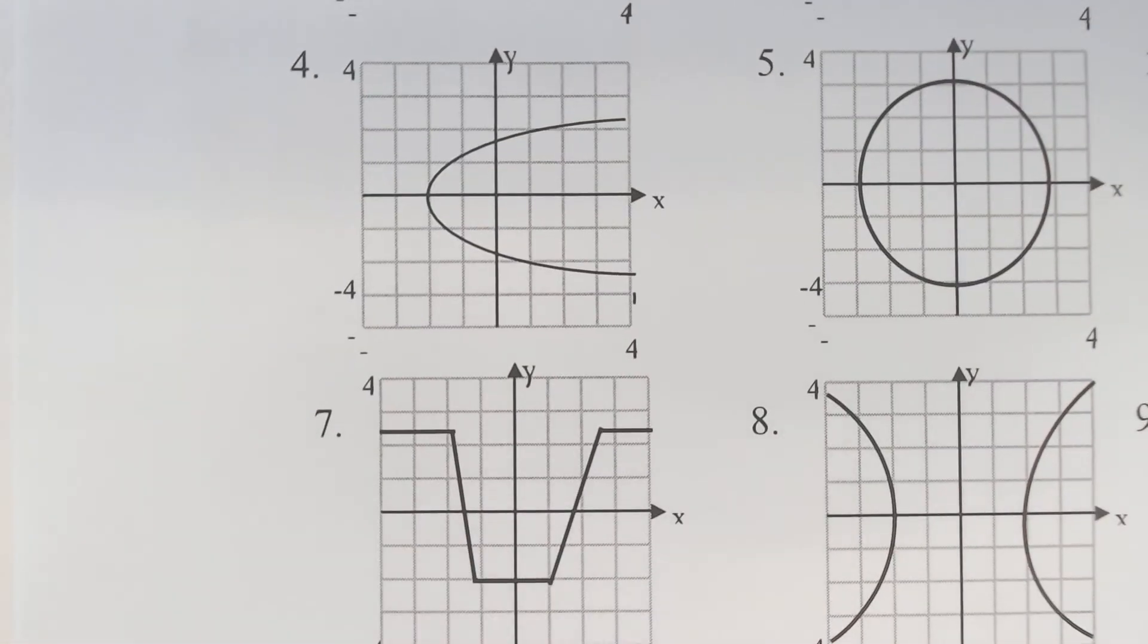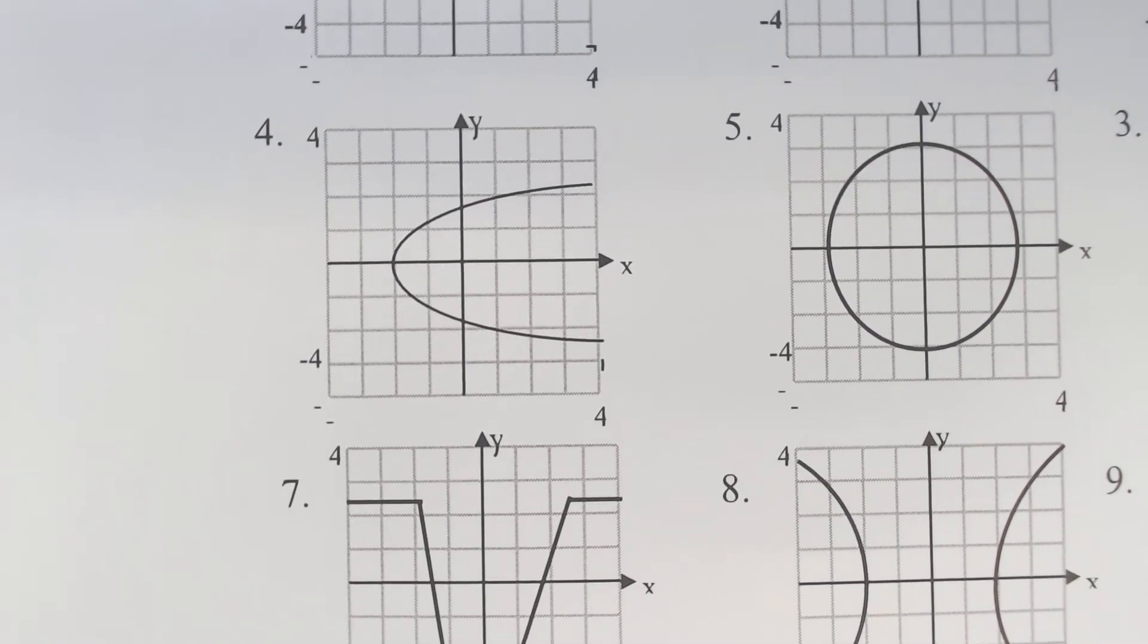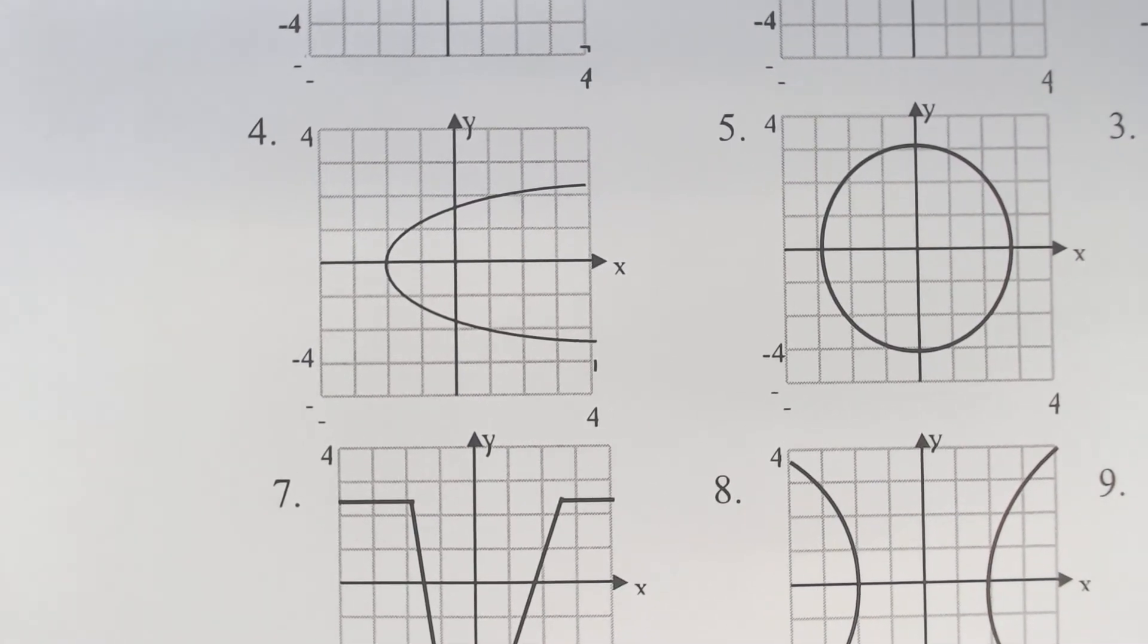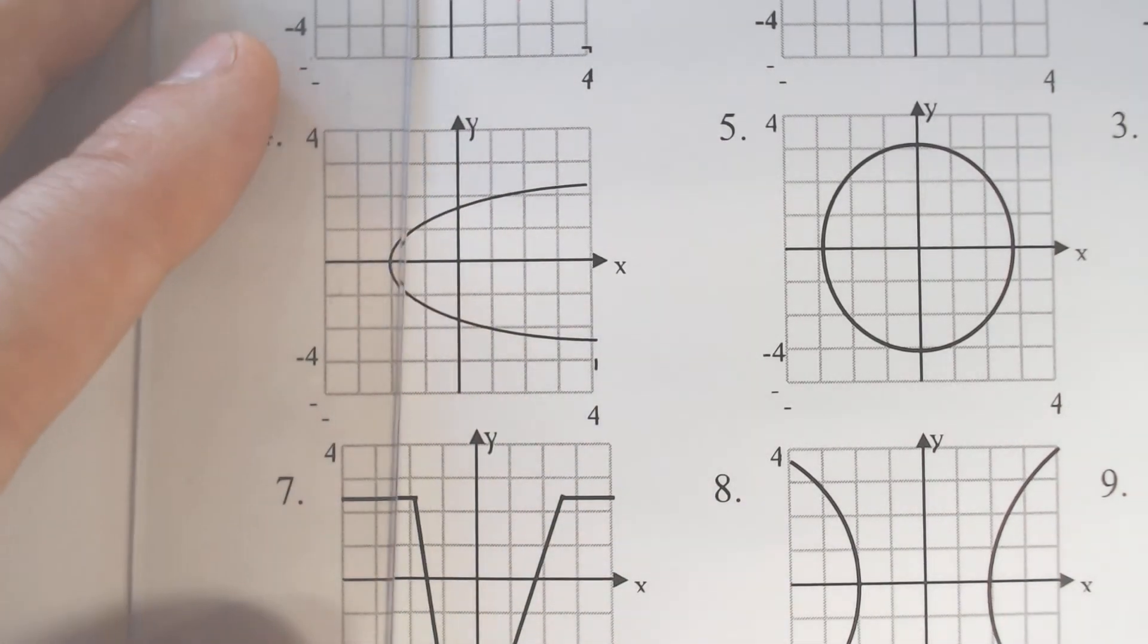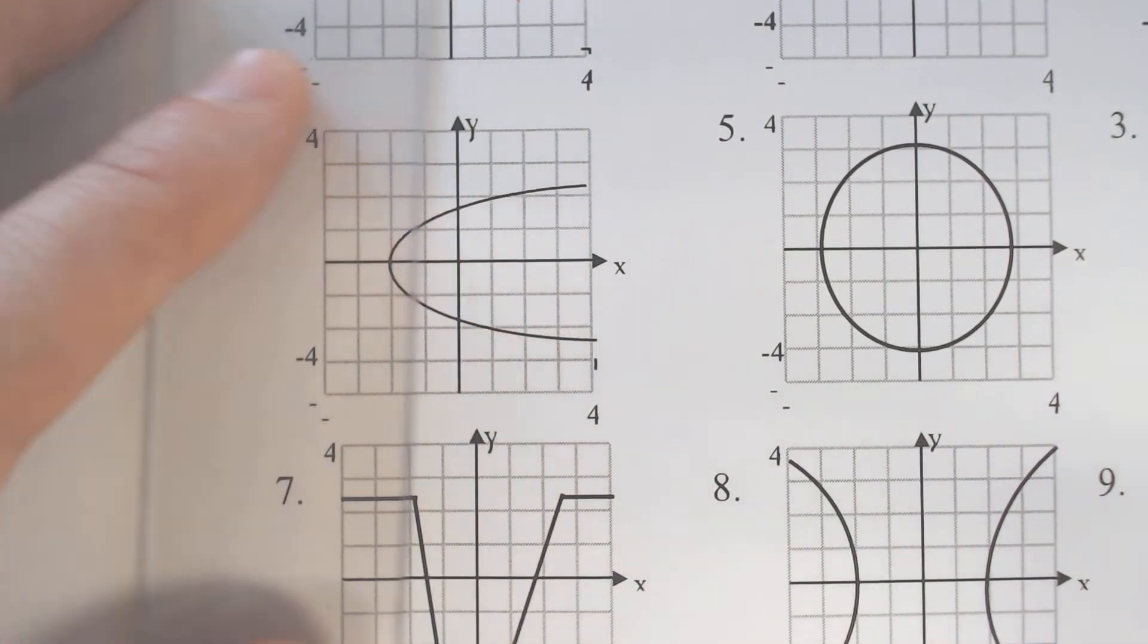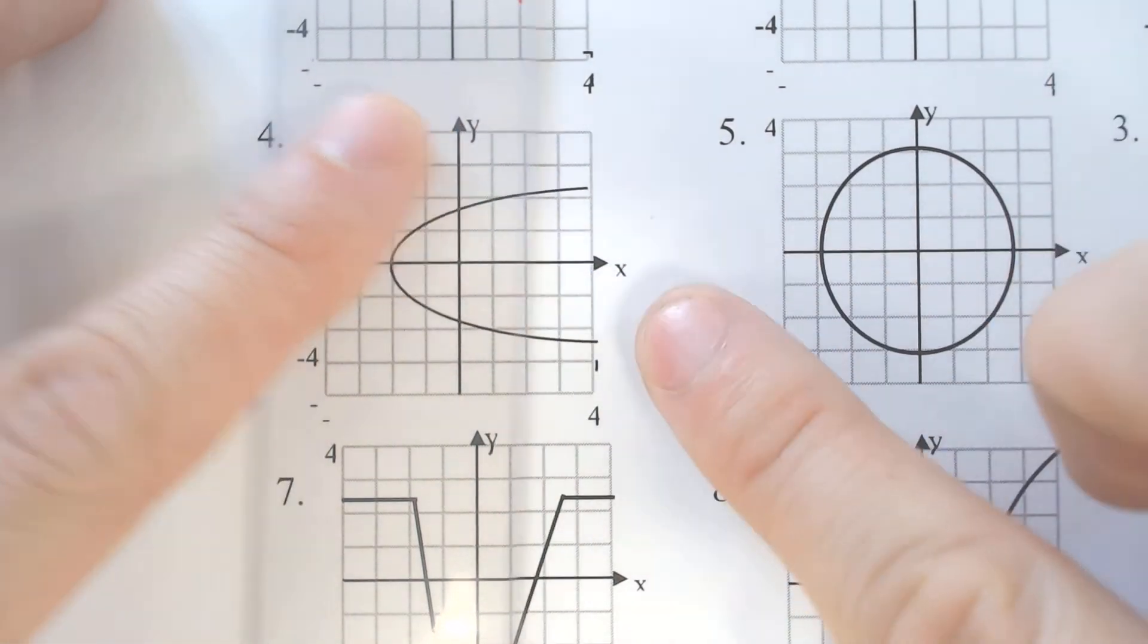Now, number four, and probably the last one because if you've watched the horizontal line test, you've probably seen vertical line test. Number four, the original function is not a function. It fails the vertical line test.